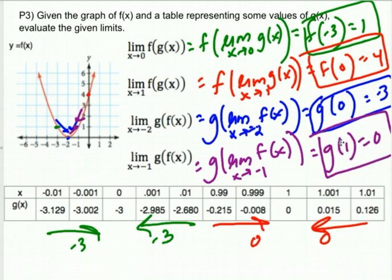Notice that if at any point any of the limits had not existed, then you can't evaluate the function at a non-existent number — the answer would be does not exist. All right, that's the gist of Unit 1, Section 5.